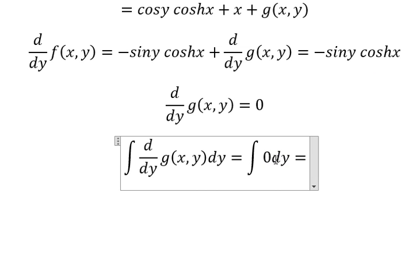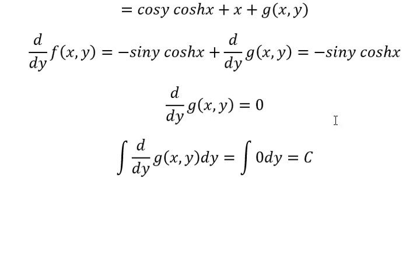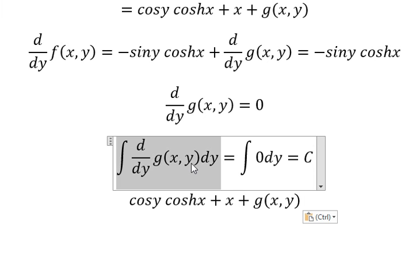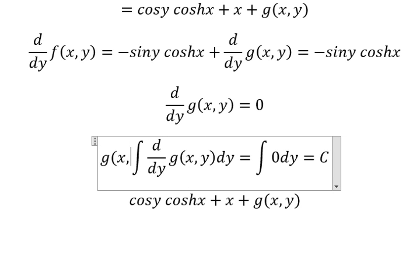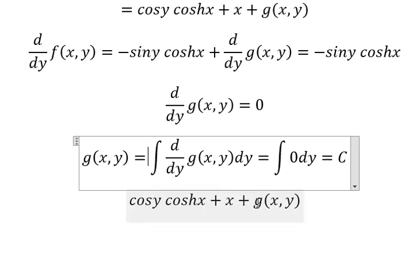Next we put the integration for the both sides. And we have C. So we go back in here, the integration of this one, that is about g(x,y). g(x,y) equals C.